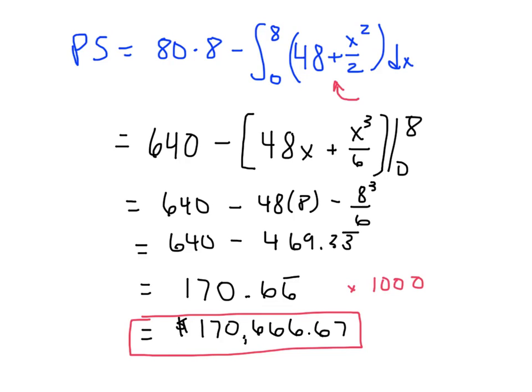So just to quickly summarize our strategy for both these problems, we need a price and a quantity, a p-bar and an x-bar. Typically, that'll be the equilibrium price. If you have just the supply and demand equation, the way you get those is you set them equal to each other, solve for x, and then plug that x back into one of the functions to get the p.